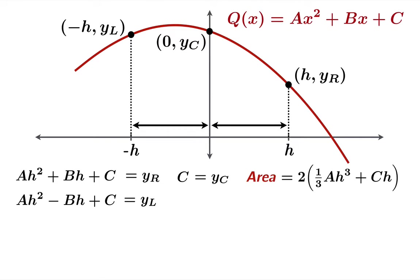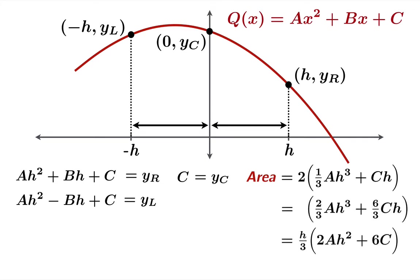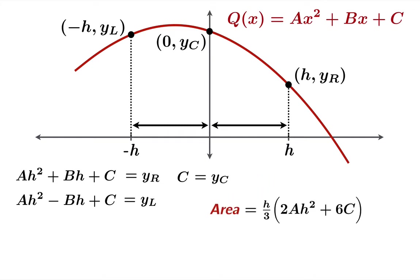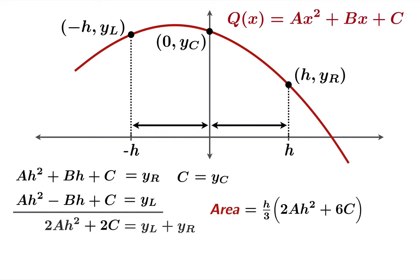Now we do a little simple algebra. We multiply the 2 inside and then factor out an h over 3, leaving h over 3 times the quantity 2ah squared plus 6c. At this point, that is our area in terms of h, a, and c. We want this in terms of the original data yl, yc, and yr. If we add the two equations for q(h) and q(−h), we get 2ah squared plus 2c equals yl plus yr.